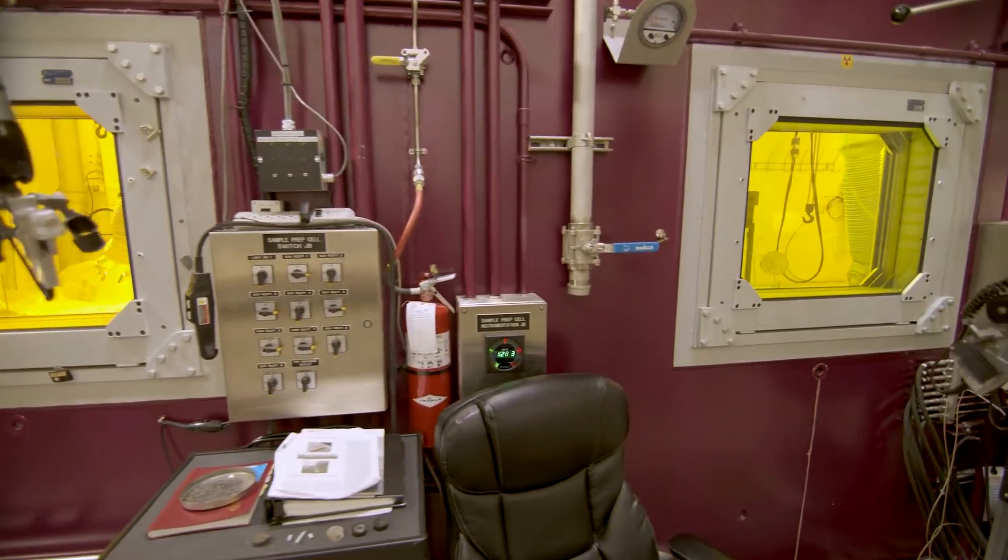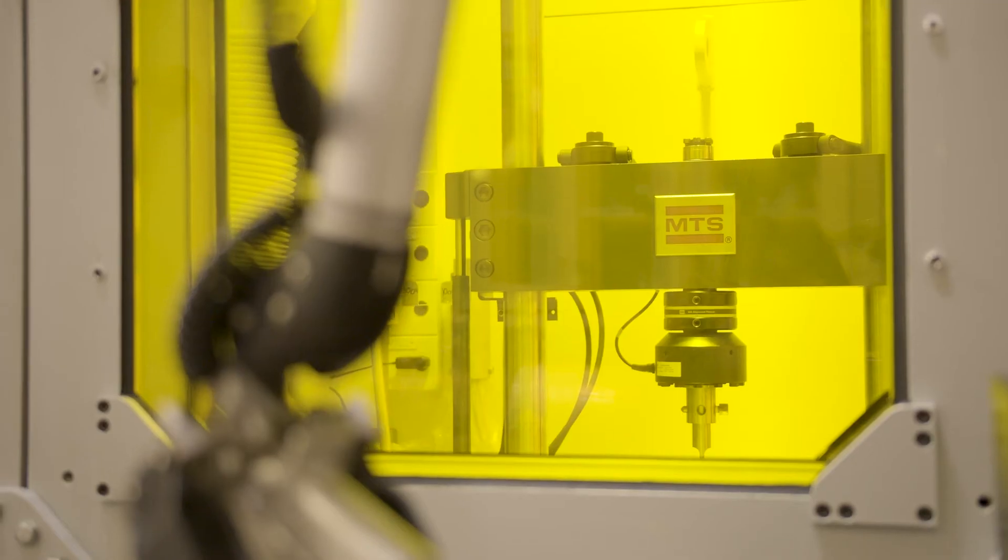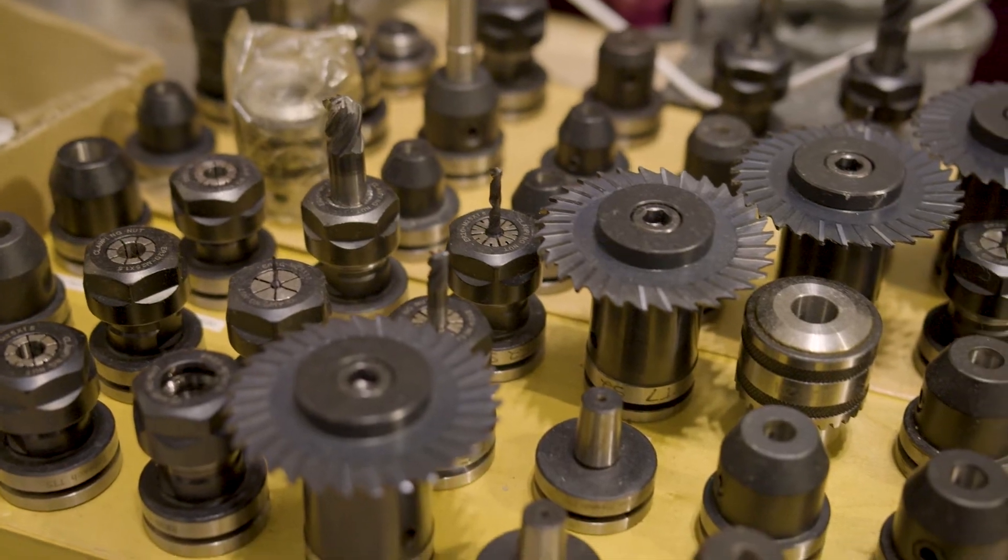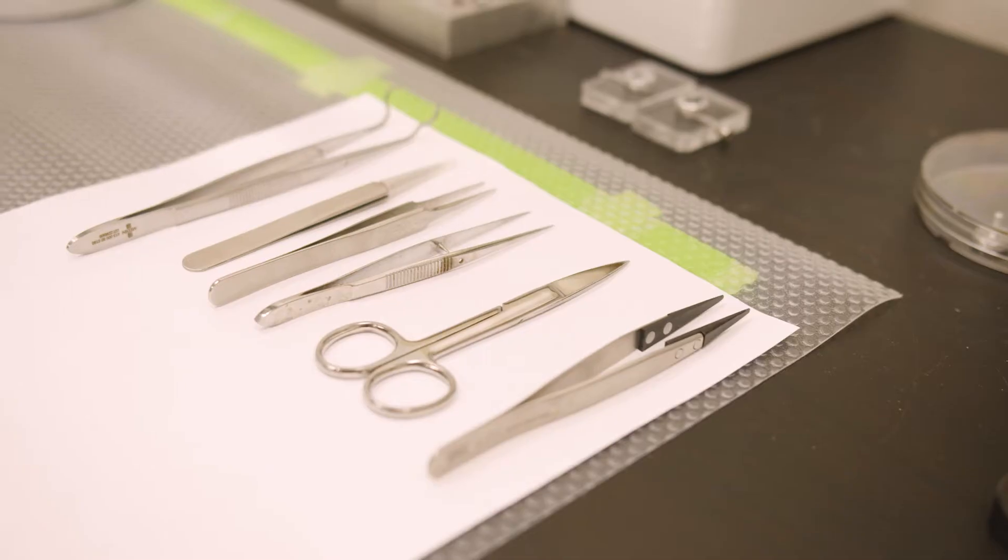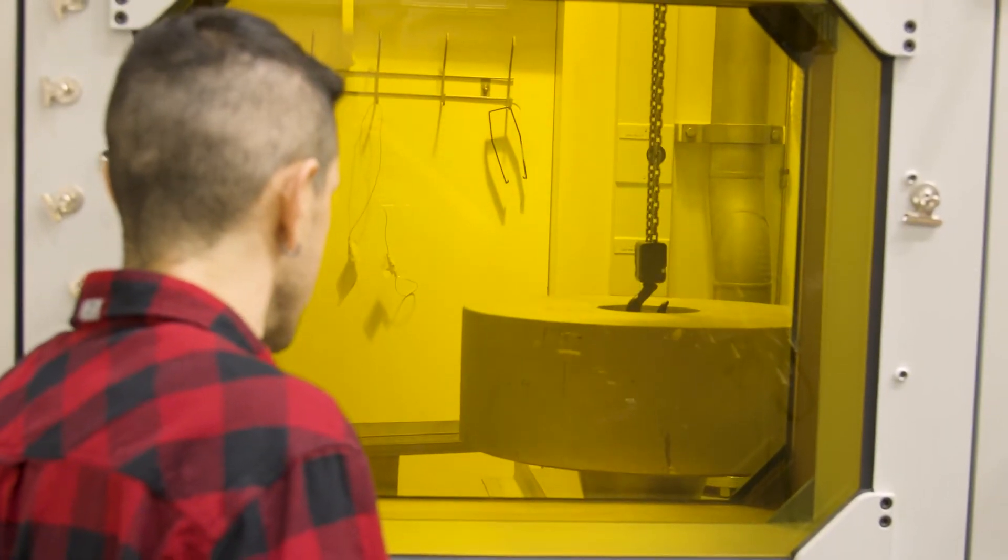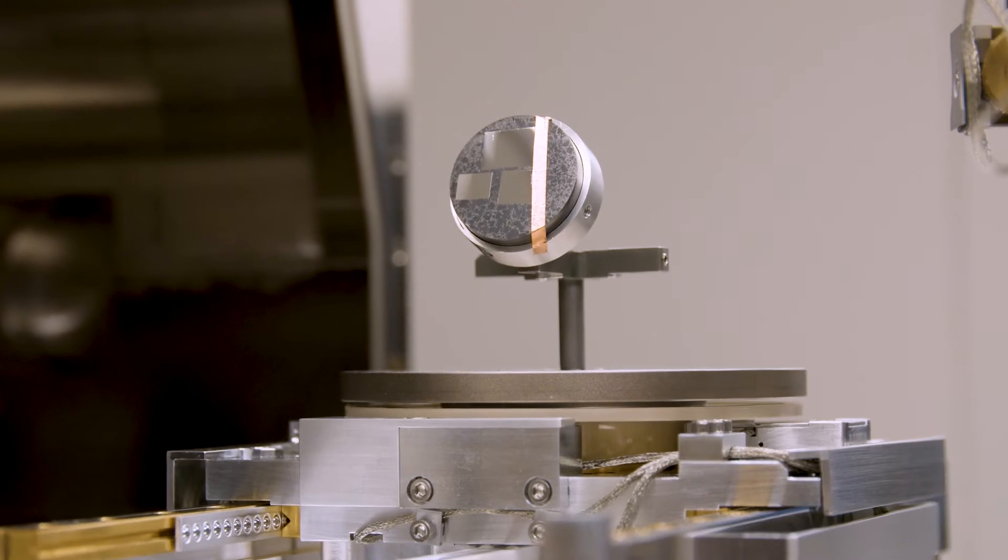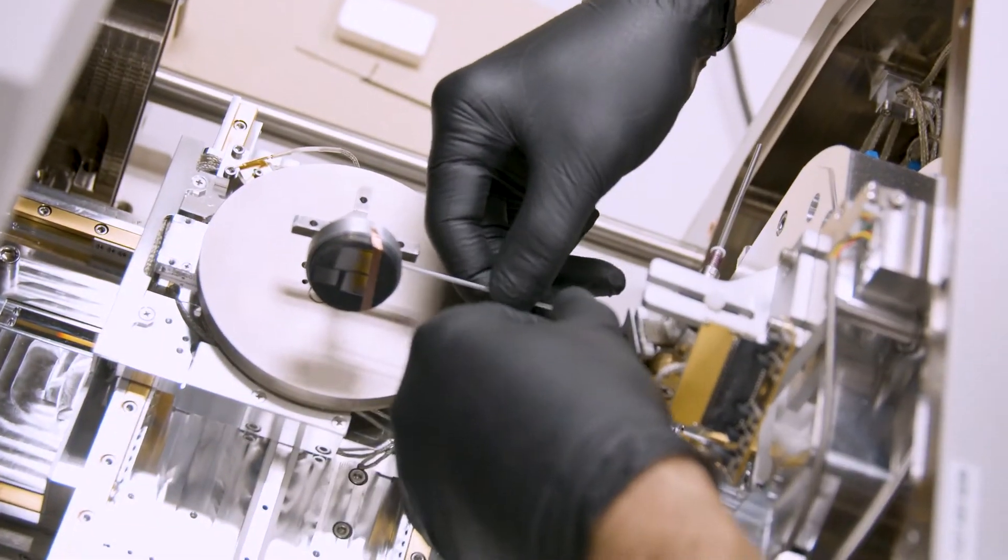Specially configured equipment inside these hot cells enables the technician to section, machine, and manipulate to prepare different sized samples for testing and examination. Larger samples are required to conduct mechanical testing, while small samples are necessary for conducting optical and electron microscopy examinations. All of these operations must be performed without actually touching the materials.